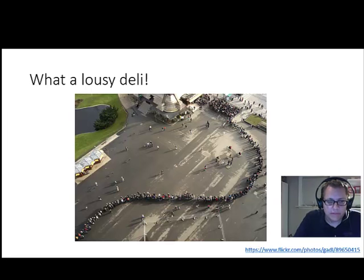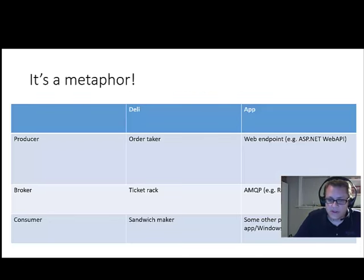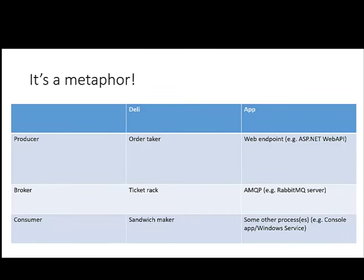Much more efficient. There's no switching. Employees have one task that they're assigned to. And this is a little more scalable, because you could have two or three or four employees and they can all pull from that same ticket rack. So, surprise — this is a metaphor for what we're talking about. This is an architecture that involves three pieces: a producer, a broker, and a consumer. In our metaphor, the producer is the order taker at the deli. But imagine we have an app, like a web endpoint, and that is the producer — it takes in requests from an API consumer. And then the broker in the deli is the ticket rack. The order taker writes down a message on the ticket — 'make the sandwich, extra tomatoes' — and puts it up on the ticket rack.